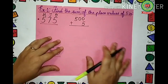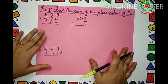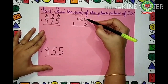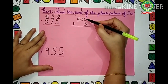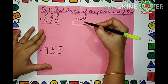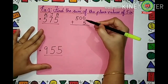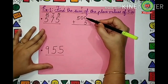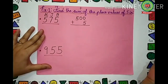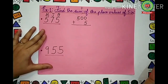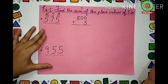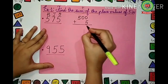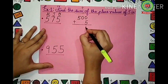Now we have to add the two numbers: 500 plus 5. First, 0 plus 5 — count 5 after 0: 1, 2, 3, 4, 5. So 0 plus 5 is 5.